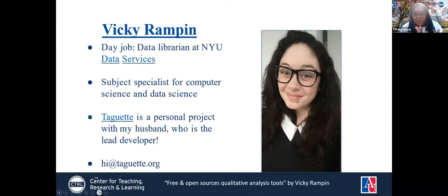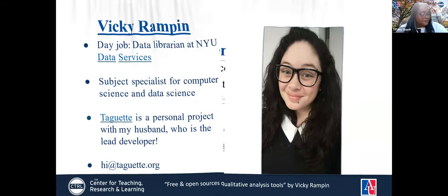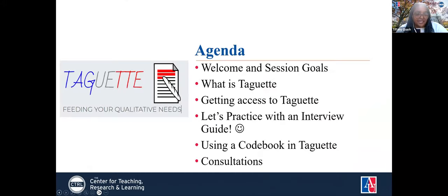I think it's really important to give the developers their flowers when talking about any program. This program was created by the husband of Vicki Rampin, who is a data librarian over at NYU in data services. If you have any additional questions about ToGet, you can email them at hi@toget.org, or you can always reach out to me. Our agenda for today includes the welcome, session goals, what is ToGet, getting access to ToGet, practicing with an interview guide, using a code book in ToGet, and how to book a consultation with me.